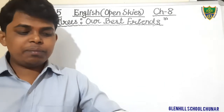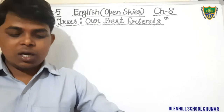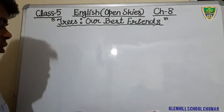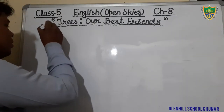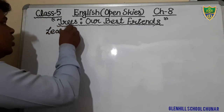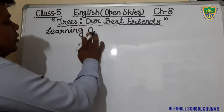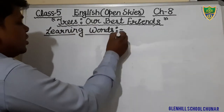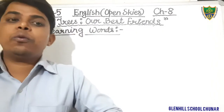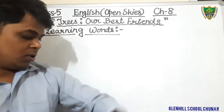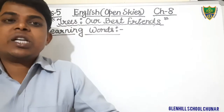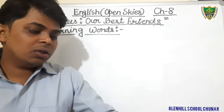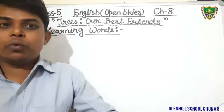Dear students, those who did not complete the word meaning should also complete it in their notebooks. Today we will discuss the exercises given at page number 62 and 63. First of all we will discuss Learning Words, which is given at page number 62. This exercise has several sentences with blanks to fill, and there is a helping box in which eight words are given. You have to select one word from the box to fill in each blank.